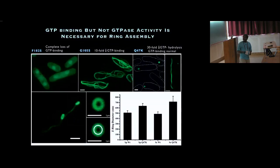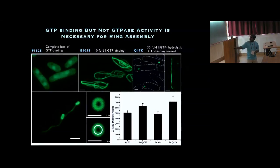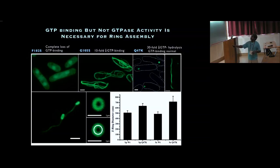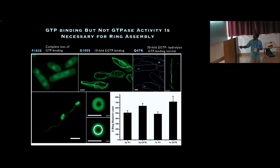We made a bunch of known FtsZ mutants. The GTP-binding mutant does not polymerize at all. Another mutant with tenfold reduced GTP binding forms only filament-like structures, not rings. The most interesting mutant has normal GTP binding but 30-fold lower GTP hydrolysis. In cells expressing this mutant we found three classes: cells with single rings, cells with only linear polymers, and cells seeming to have ring and filament connected. Surprisingly, the diameter of these rings — whether wild-type or this mutant — was consistently around 500–600 nanometers.